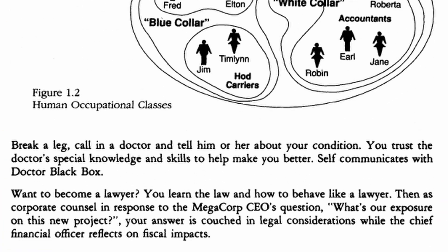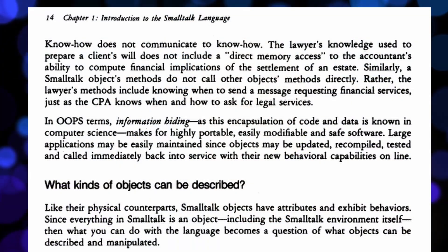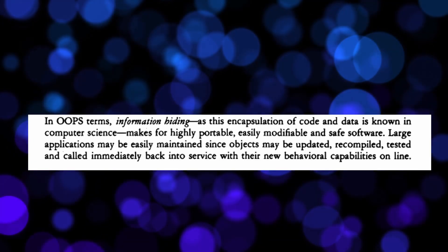So the lawyer, the accountant, the trucker, the doctor — they are like black boxes. The exact details of their knowledge and skills — what's inside them — is unknown to us. What we do know is that they can do useful things because we know the type of job they have; in object-oriented terms, we know their class. On page 12, the tutorial gives this example: break a leg, call in a doctor and tell him or her about your condition. You trust the doctor's special knowledge and skills to help make you better. The code that calls the doctor object does not have access to the data, the variables, or the code — the implementation details of the methods of the doctor object. In object-oriented terms, information hiding — as the encapsulation of code and data is known in computer science — makes for highly portable, easily modifiable, and safe software.